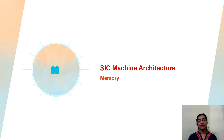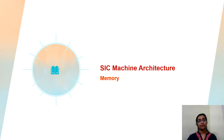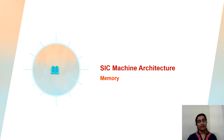First, we can see the SIC machine architecture, which means it is a processor architecture. Whenever we learn a processor architecture, we learn about the memory, the registers, instruction format, addressing modes, etc. These things define the processor architecture. For this SIC machine also, we have to learn all these things. So first we can consider the memory part.